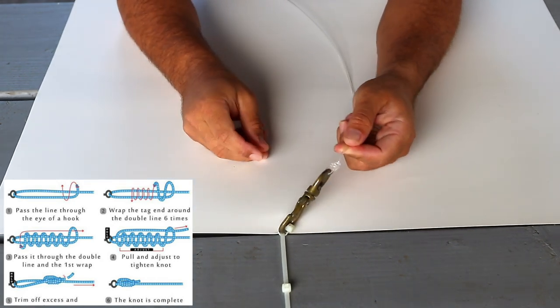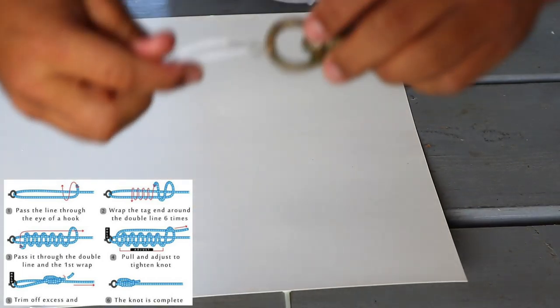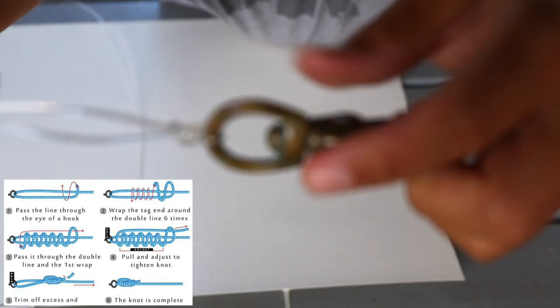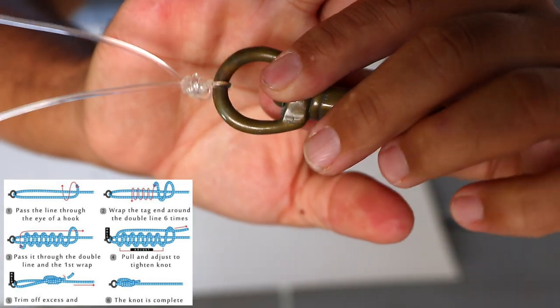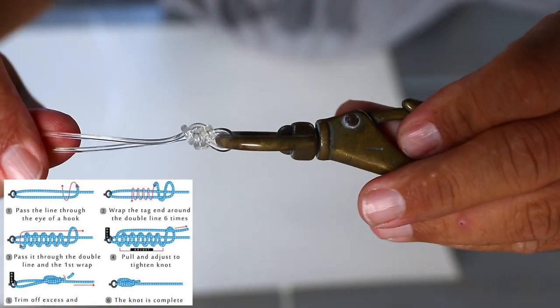That's pretty much it. It's a super simple knot to tie and an extremely strong knot. Everything I've read on it has said that the line will actually break before the knot breaks. So this is definitely a good knot to put in your arsenal of knots to know, and I hope you guys like this knot.